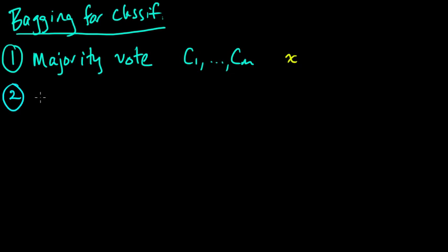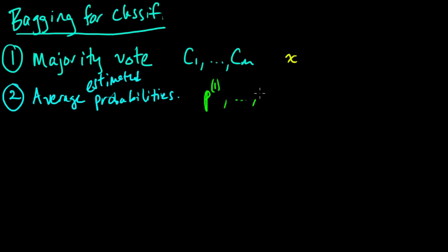Another possibility, which you can often use, is to average the probabilities, average the estimated probabilities. So for this approach, we need to have estimated probabilities to average. So instead of just getting a classifier, we're going to assume that we get for each classifier also defines some PMF on the classes. So let's denote them P1 up through PM. So each of these is a PMF on the set of classes, maybe we call it script Y, just some finite set of classes.